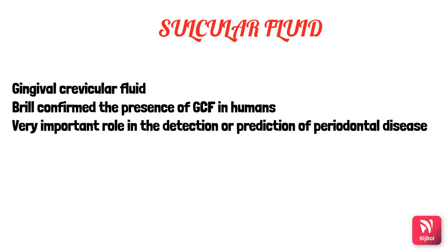Next we will see the gingival crevicular fluid or sulcular fluid. Its presence has been known since the 19th century, but its composition and possible role in oral defense was studied during the 1950s. Some investigators introduced a filter paper into the gingival sulcus of dogs and injected fluorescein intramuscularly. The fluorescein was recovered onto the paper strips within three minutes.